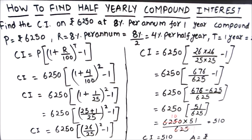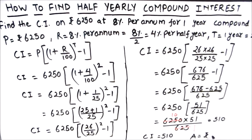Our final answer is Rs. 510. This is how we can find compound interest when it is compounded half yearly. I hope this video is helpful to you. If you like the video, please hit the like button and subscribe to my channel for more math videos. Thanks for watching.